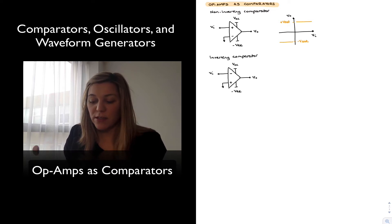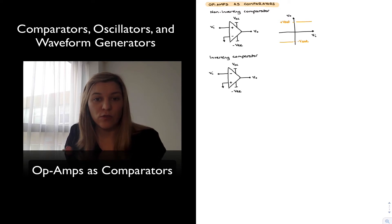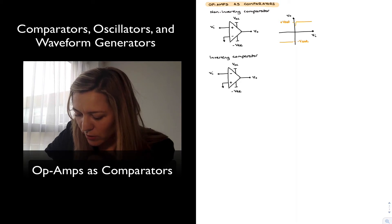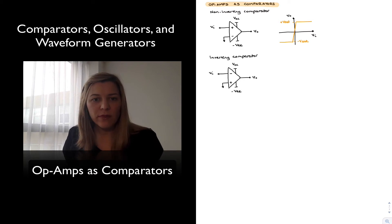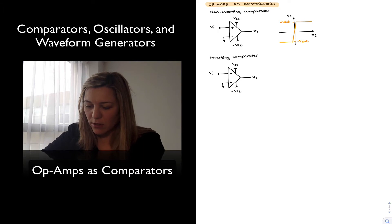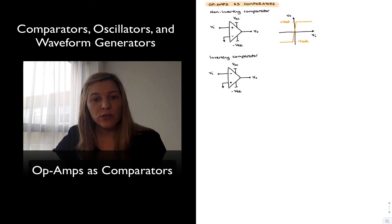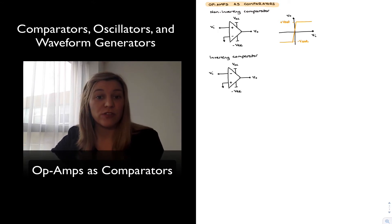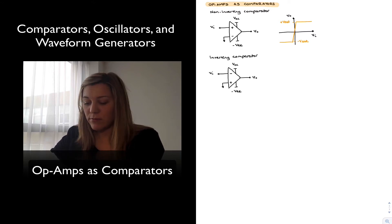In the ideal case, the transition will happen instantaneously whenever V_in equals zero volts. In a real op-amp, even though it has a very high gain, it's going to be a finite open-loop gain, and so there's going to be a small transition region between the two. For non-linear circuits, we typically cannot have a single linear function to describe operation as we do for op-amp circuits operating in the linear region.